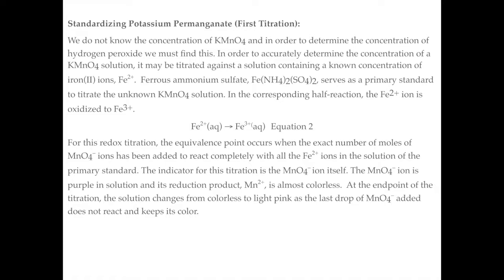You're going to be adding permanganate to iron 2+ ions. The permanganate will react with the iron, producing manganese ions and iron 3+ ions, which are colorless. Once you have equal amounts of iron 2+ ions and permanganate, that is your equivalence point. As soon as you pass that with just one extra drop of permanganate, you'll see a purple color and you know you're just past your equivalence point.